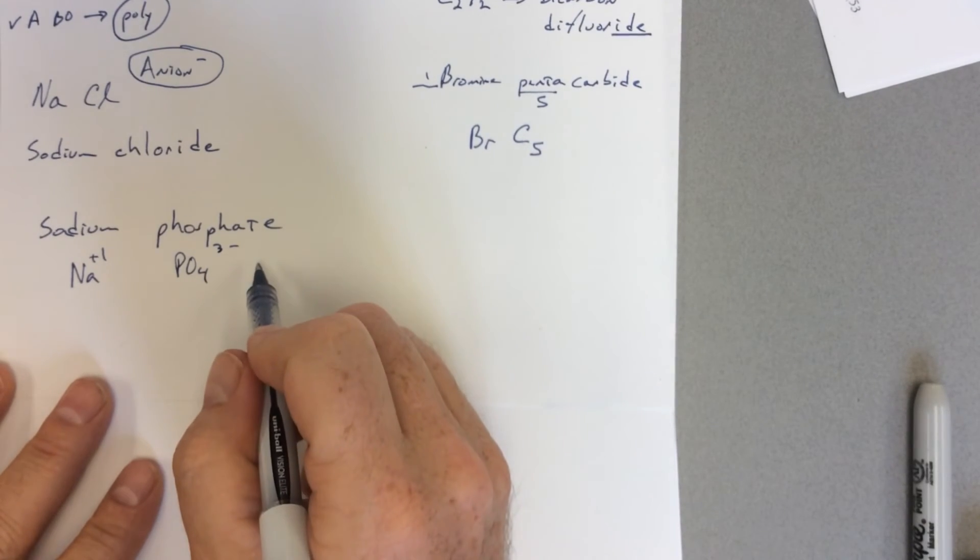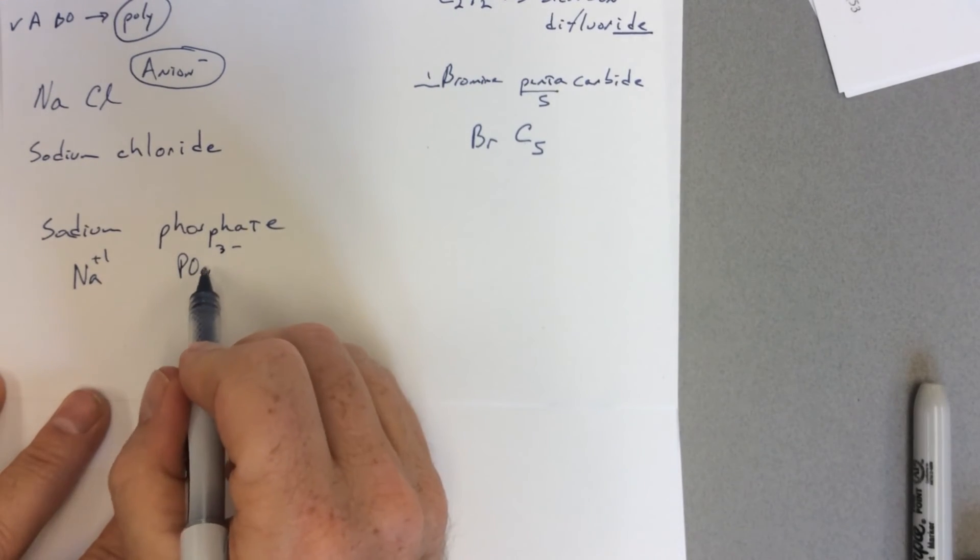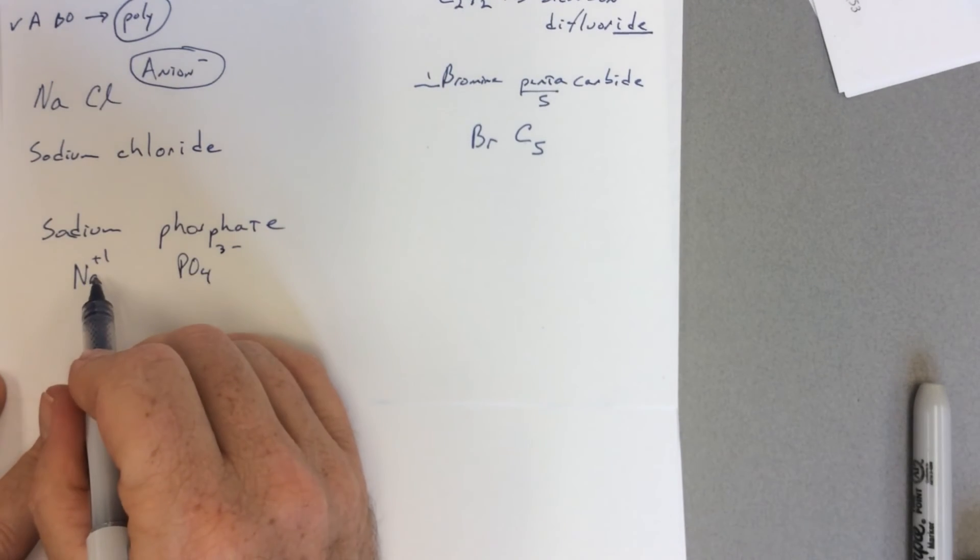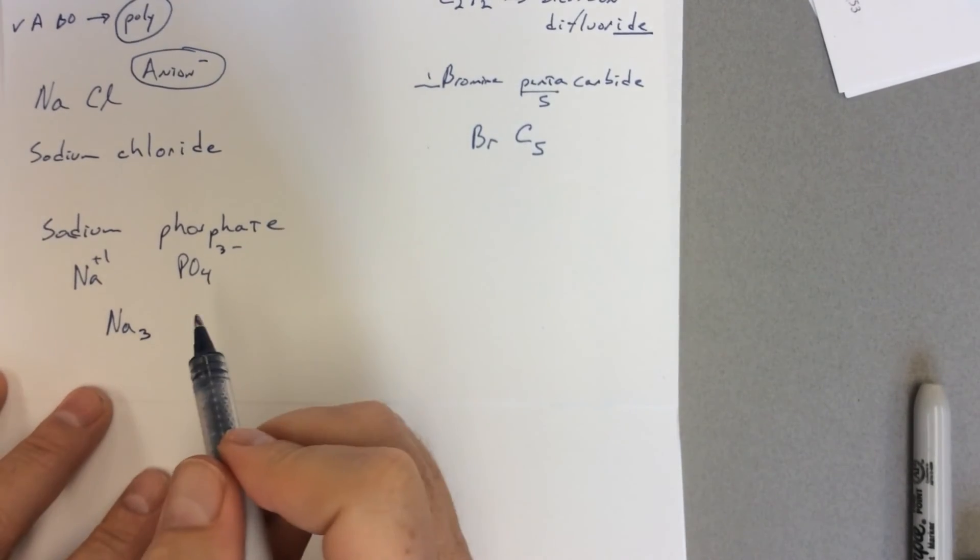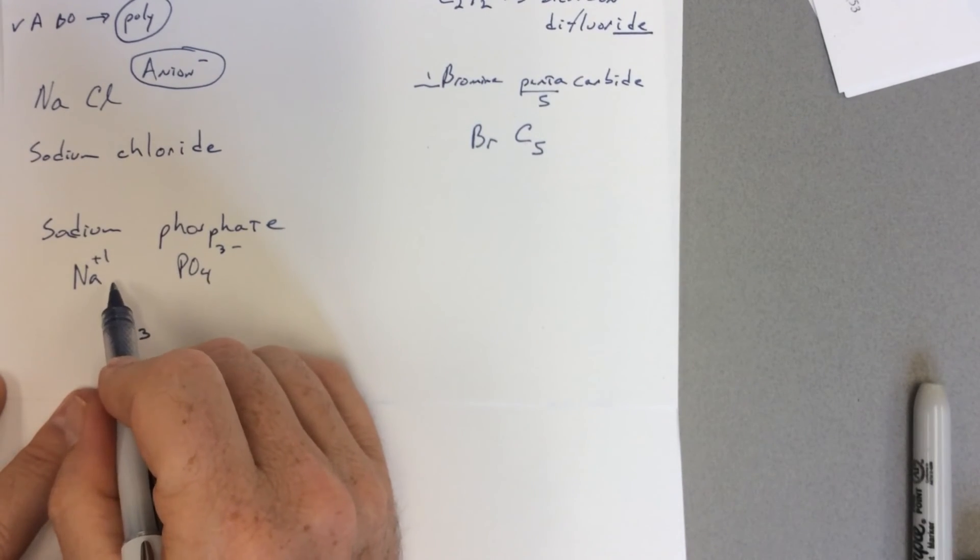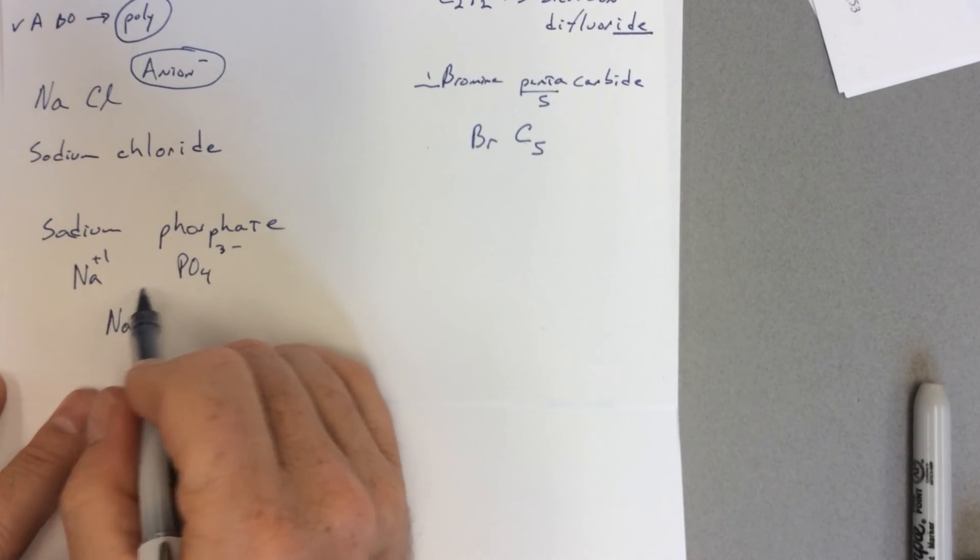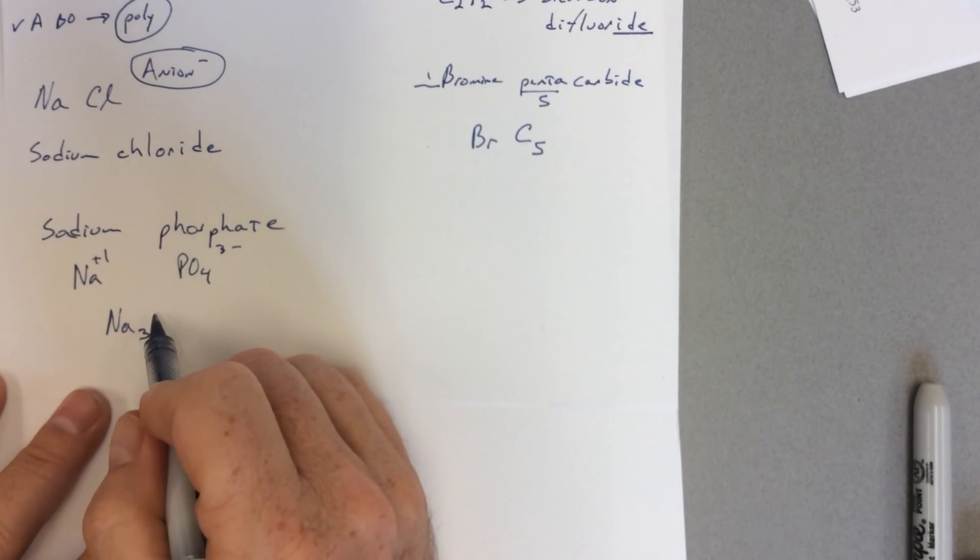So remember that all compounds must end up neutral. So if I have a -3 charge here and I have a +1 charge there, I need three more sodiums. So I'm going to have Na3, and three times +1 is +3. This PO4 is already -3, so 3- plus 3+ equals zero. So it's Na3PO4, sodium phosphate.